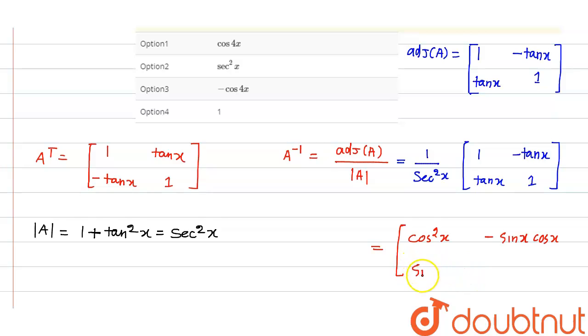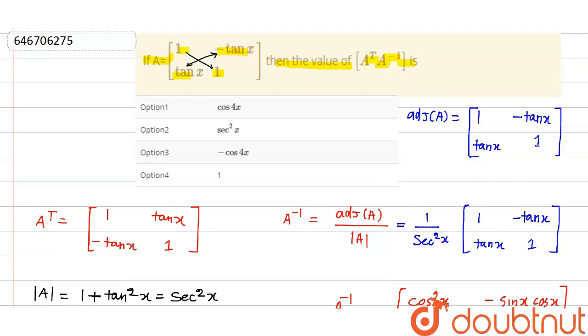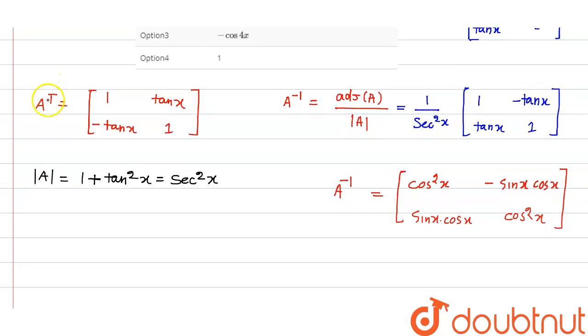This is sin x cos x and here I get what? Cos square x. This is what A inverse. Now we need to find what? We need to find A transpose into A inverse.